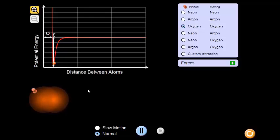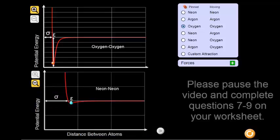Take a moment to pause the video and make note of some other differences that can be seen on the graph of two oxygen atoms when compared to two neon atoms. Why might these differences make sense?